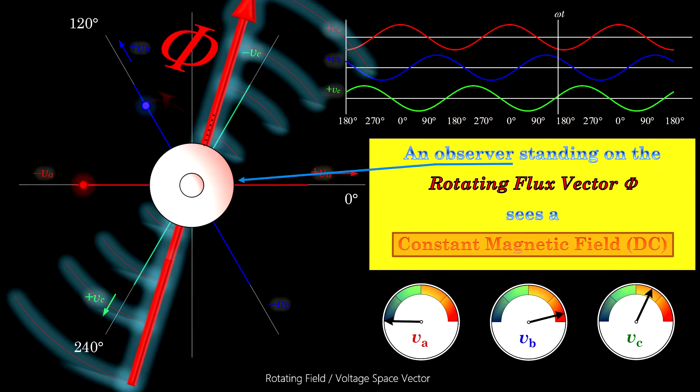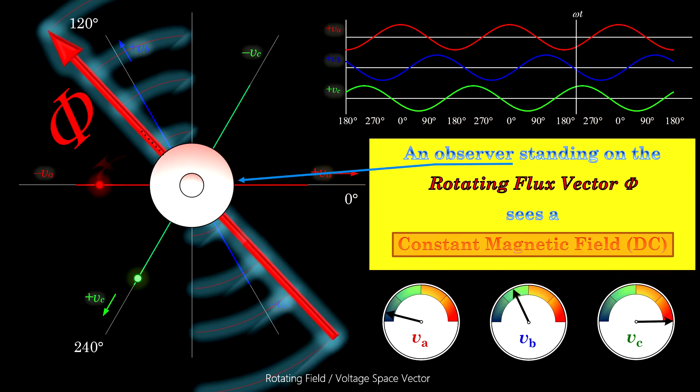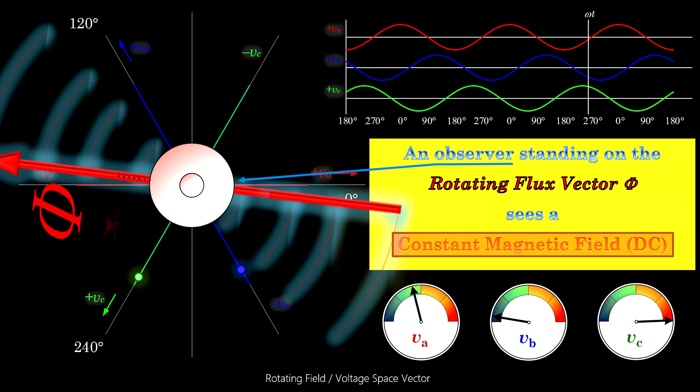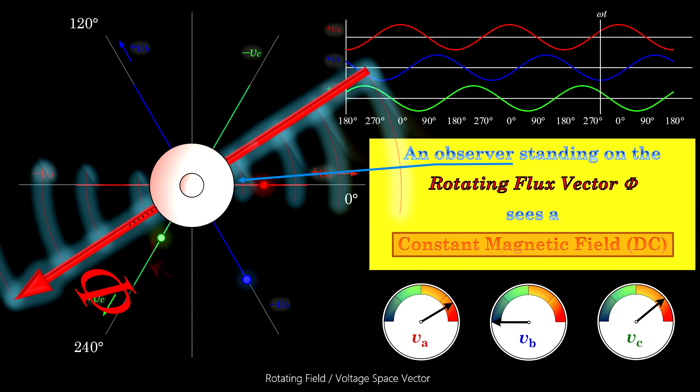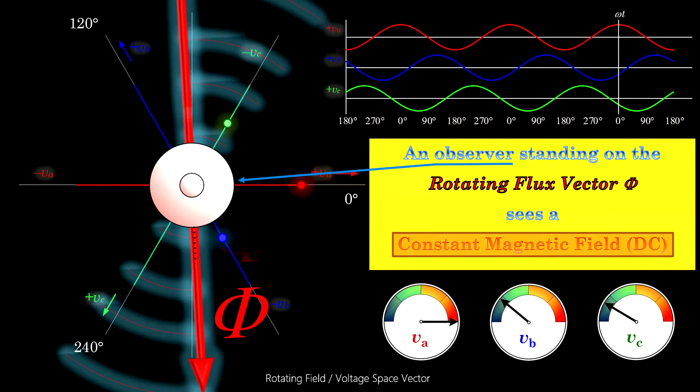Anyway, our observer looks at constant magnetic flux, and in no way he would find out that he rotates through space together with the vector he is standing on.